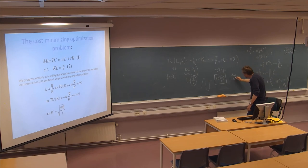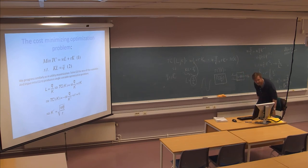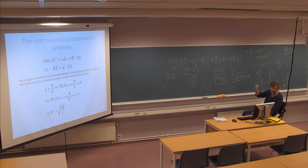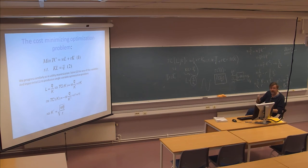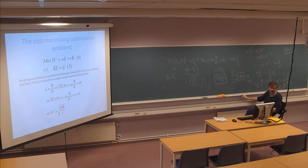We enter K and L into the production function and get output Q. We had input costs R and W, and now we have shown mathematically — and graphically — that we can find a total cost function in terms of output. This is essentially transforming input cost structure into output cost structure. The principle works even with more than two inputs, though the mathematics becomes more complex.